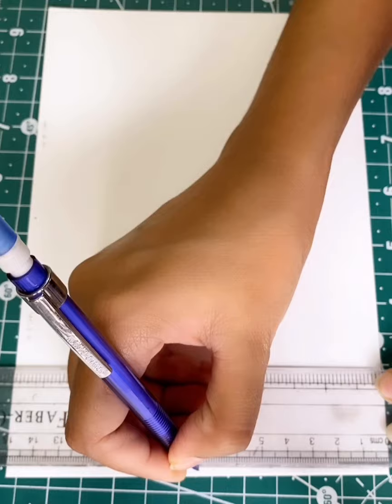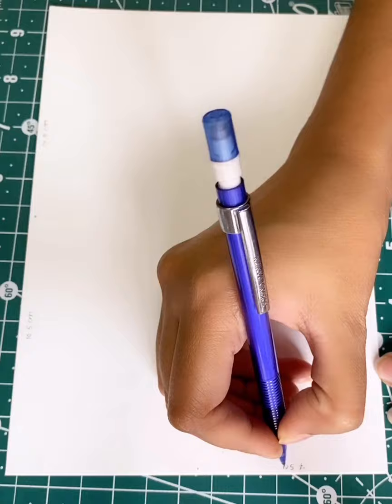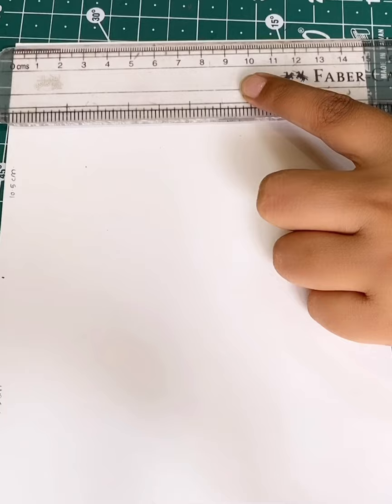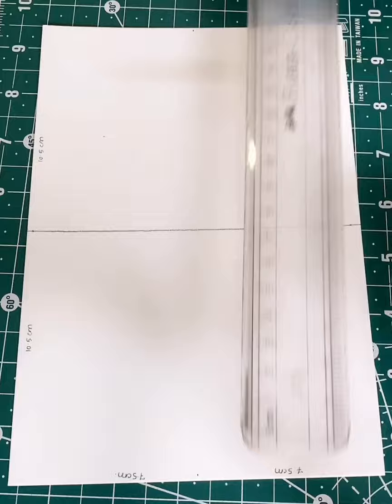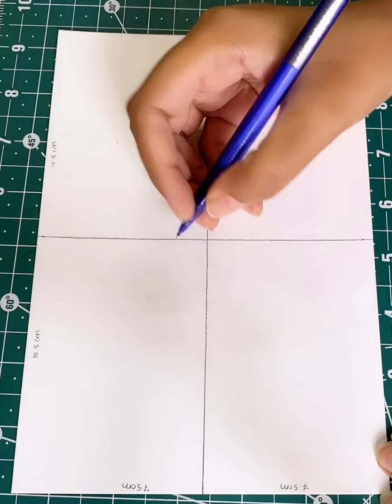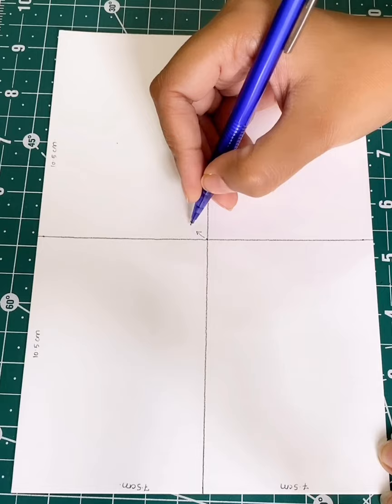The width of my page is 15 centimeters, so I'll be marking the midpoint at 7.5 centimeters. The point where the horizontal and vertical lines intersect is the center of our page.